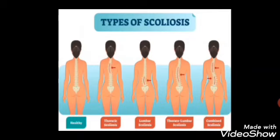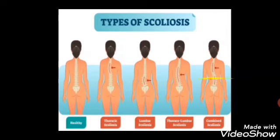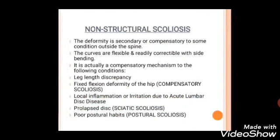Here are the general types of scoliosis illustrated. In the first figure you can see a healthy straight spine. In the second figure you can clearly see thoracic scoliosis, where only the thoracic vertebrae are affected. The third is lumbar scoliosis, the fourth is thoracolumbar scoliosis, and the fifth figure again shows a healthy spine for comparison.